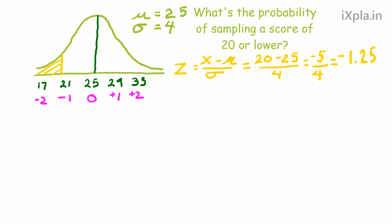And now the question is, how much of the area of this entire curve is equal to or less than 20 in terms of the raw score language or equal to or less than negative 1.25 in the z-score language? And you need to look that up in the back of the book in Appendix A again. And if you do that, you look up 1.25.